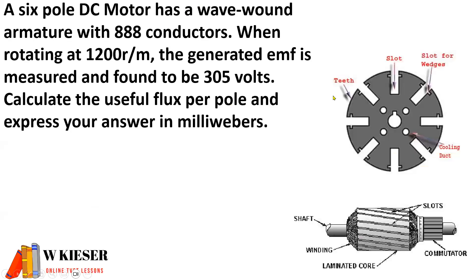In this example, a 6-pole DC motor has a wave-wound armature with 888 conductors. When rotating at 1,200 revs per minute, the generated EMF is measured and found to be 305 volts. Calculate the useful flux per pole and express your answer in milliweber.